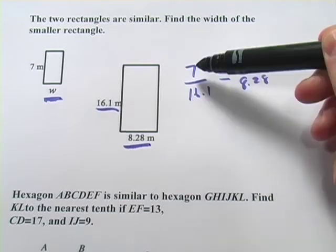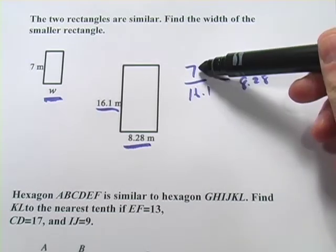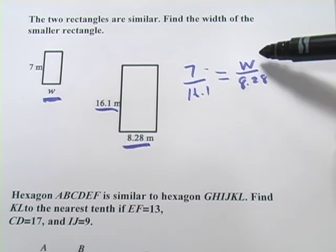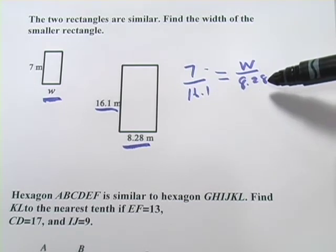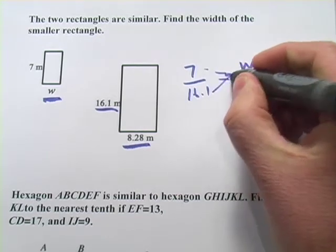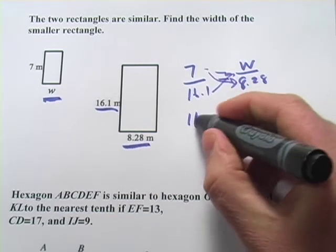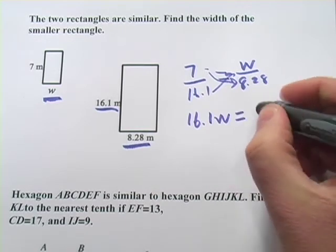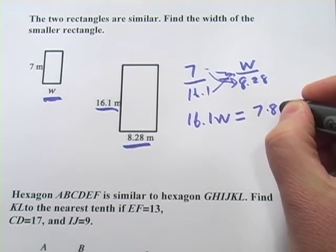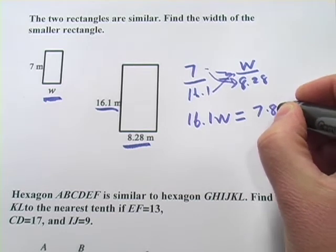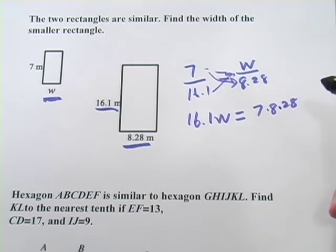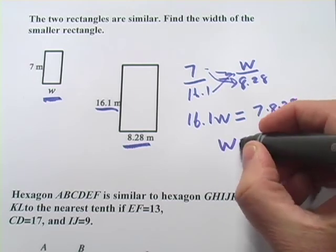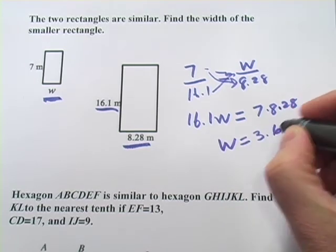So I've got length of the first smaller rectangle, length of the larger rectangle, width of the smaller rectangle, width of the larger rectangle. So the same things are in the same spot. So we can go ahead and cross multiply. We're going to get 16.1 times W equals 7 times 8.28. And I think when you crunch the numbers on there, you're going to get 3.60.